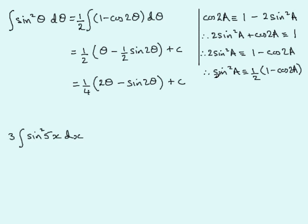So we have sine squared, 5x, equals a half, 1 minus cos, 2 lots of 5x. In other words, the cosine of 10x.